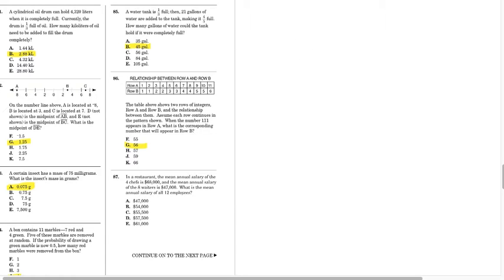87. There's going to be some math here. 4 chefs at 68, 8 chefs at 47, we need to find the mean. I'm going to get rid of some of these zeros. So we're just going to do 4 times 68. And then we're going to do 8 times 47. And we'll change it back to thousands later, but for simplicity's sake, let's just do it this way.